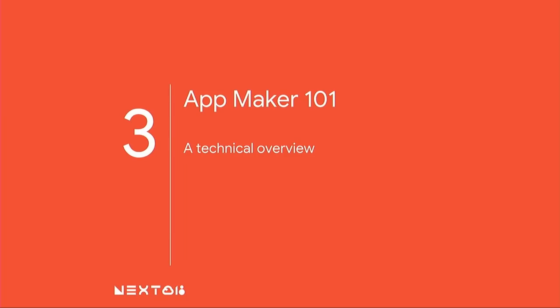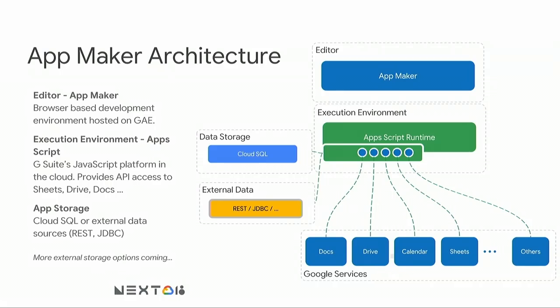To get into the meatier stuff with App Maker, I'll give a general technical overview and dive into the main technical artifacts. First up is the architecture — this is somewhat simplified. At the top you have your editor being served through a browser, coming from Cloud Platform. It's your developer environment, all working within a browser. There's no SDK downloads or anything like that. The most supported browser environment is Chrome, though other browsers do work with App Maker as well.